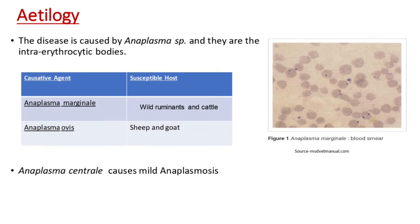Coming to etiology, the disease is caused by Anaplasma species, which are intra-erythrocytic bodies. Anaplasmosis in wild animals and cattle is caused by Anaplasma marginale, while in sheep and goat it is caused by Anaplasma ovis. Anaplasma centrale causes mild Anaplasmosis.